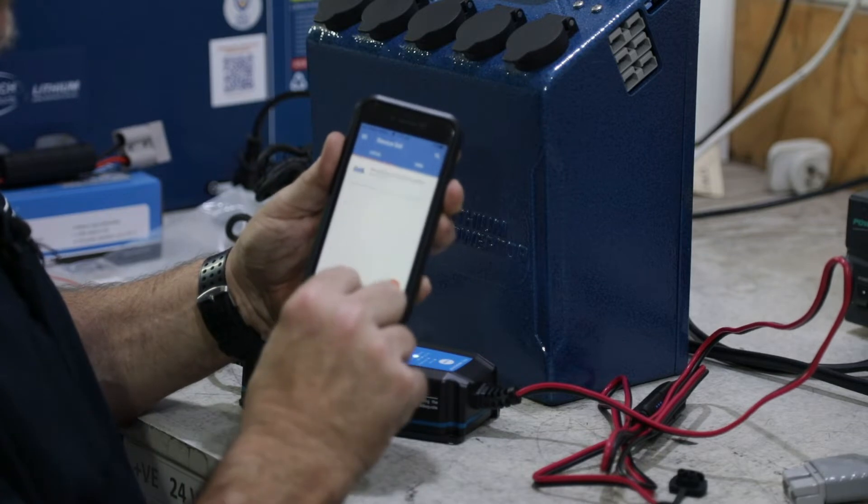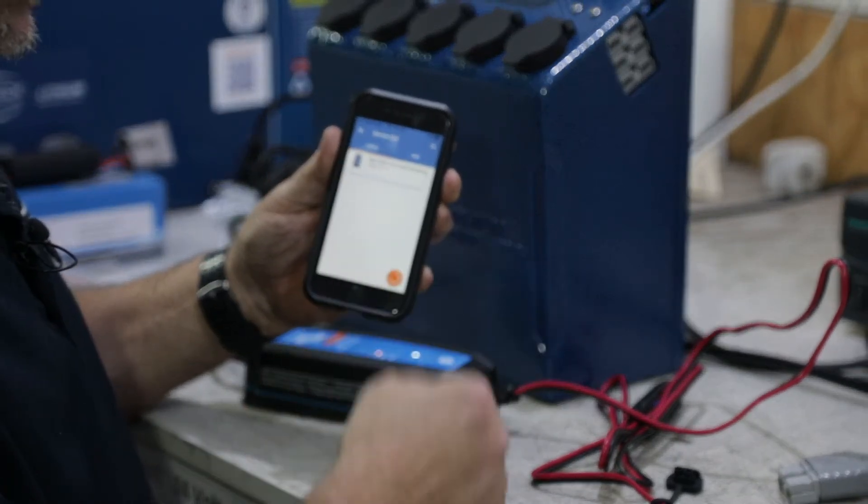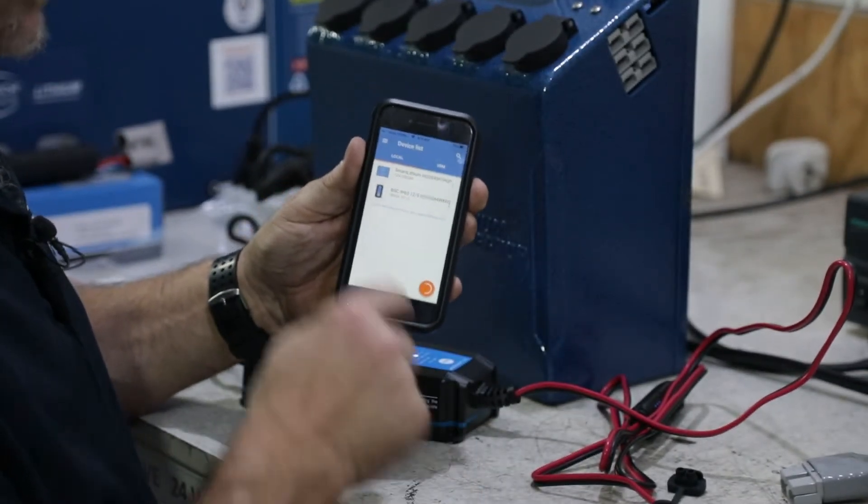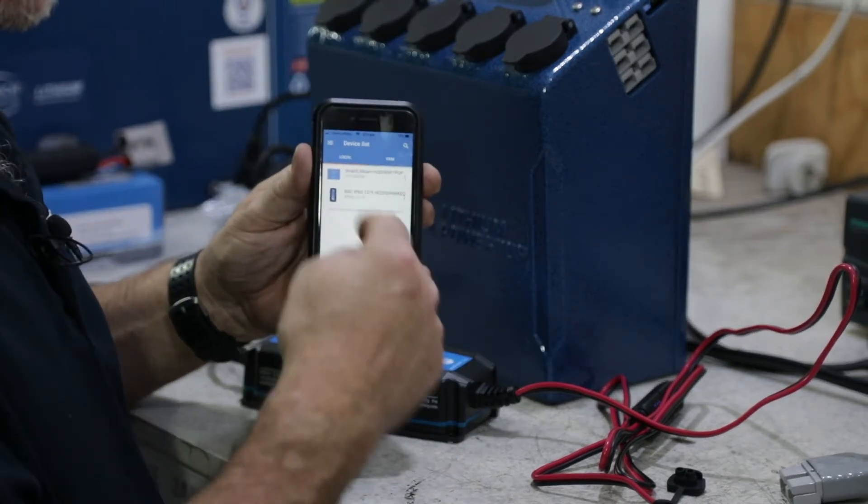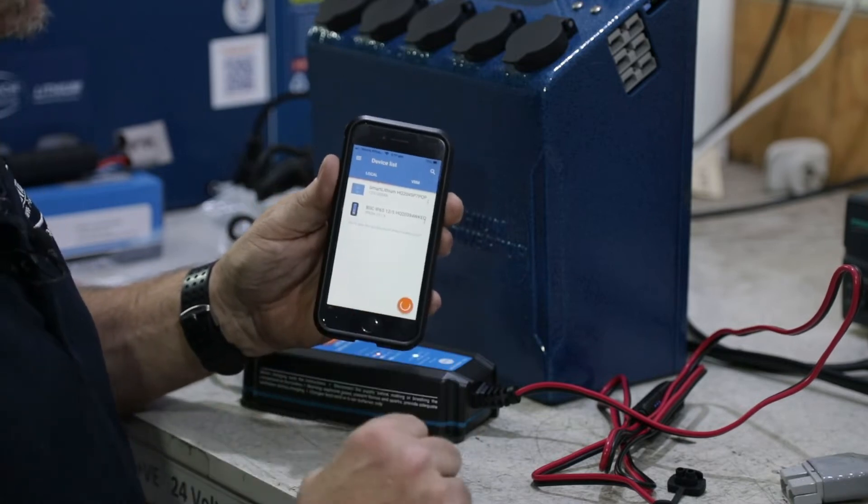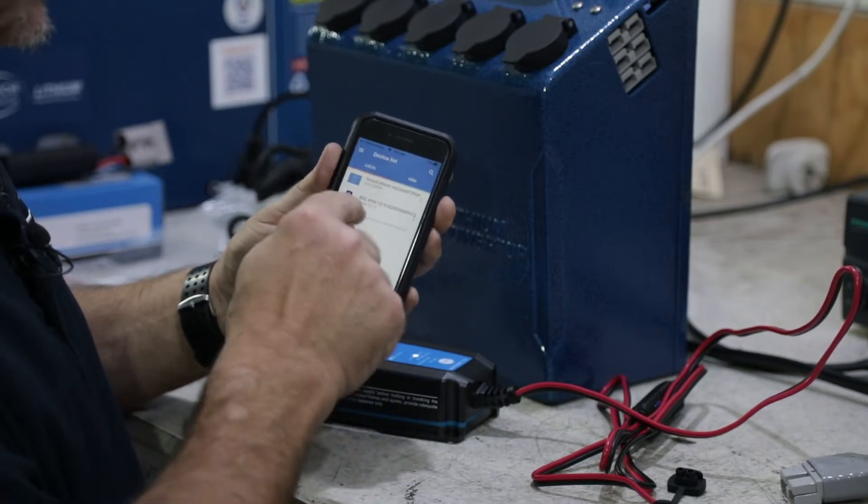You'll notice it's showing the smart shunt but not the charger because the last device I was connected to was the smart shunt. So you've got to either hit this or drag this down or hit the refresh.